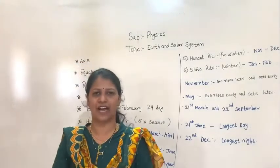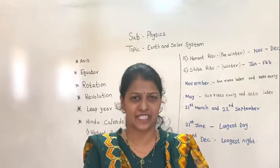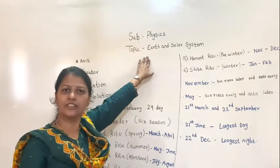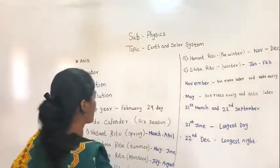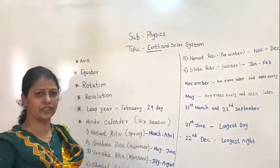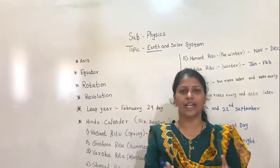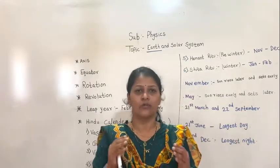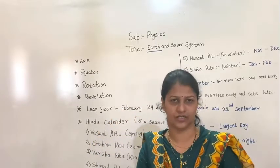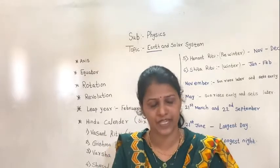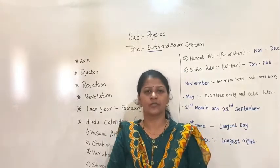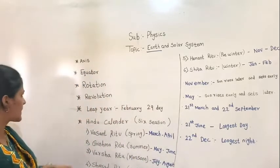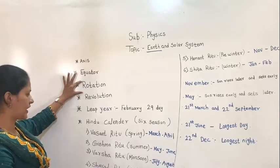Good morning, dear students. We are back with our physics lesson. Already we have started about Earth and the solar system, and we are focusing on Earth. In the last period, we discussed why Earth is called a unique planet, why life exists on Earth — because of the atmosphere — and we discussed the different layers of the atmosphere. We also discussed axis, equator, rotation, and revolution.